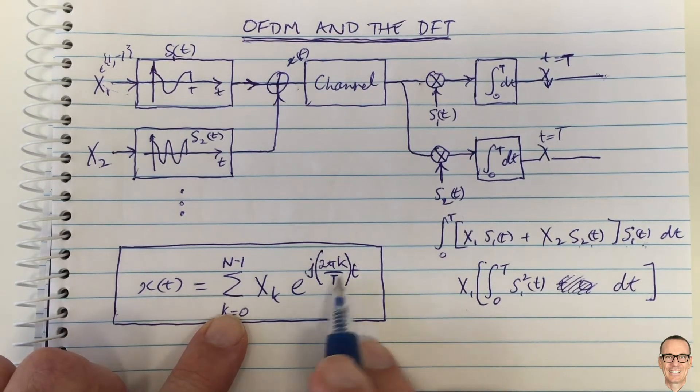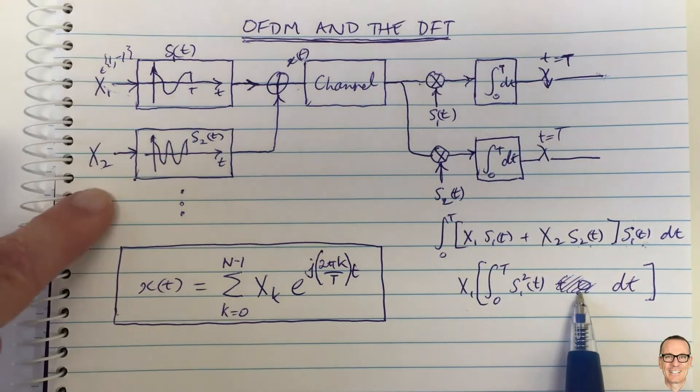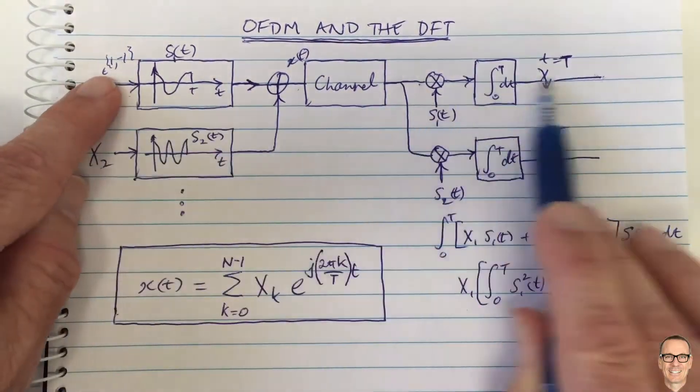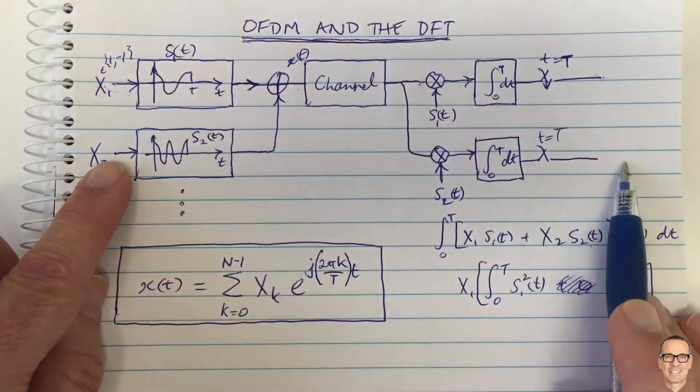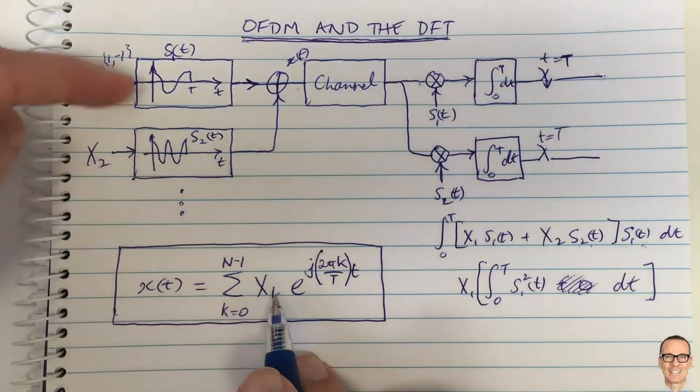Each channel can be transmitted orthogonal to the other channels. And what do we notice when we write this down? It's just a mathematical expression of exactly what we've done.